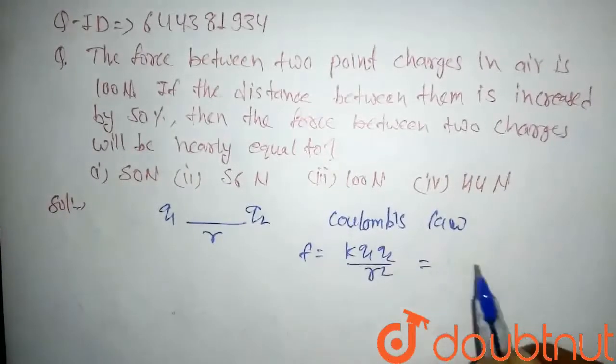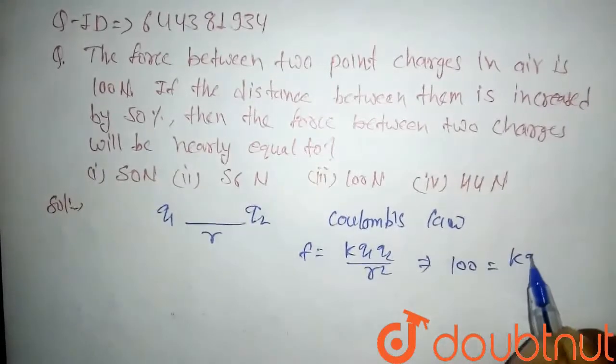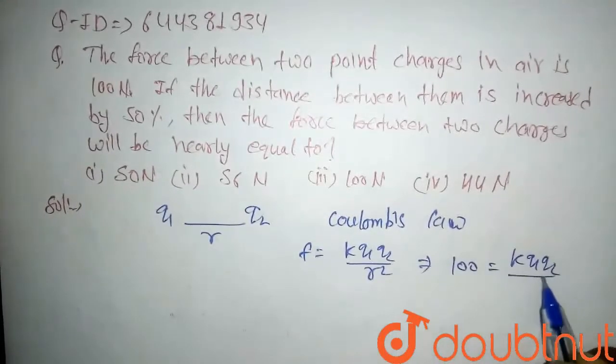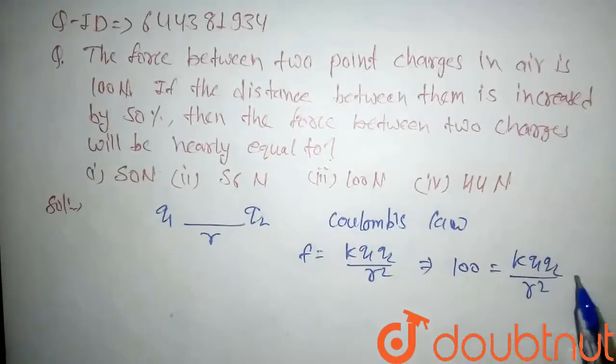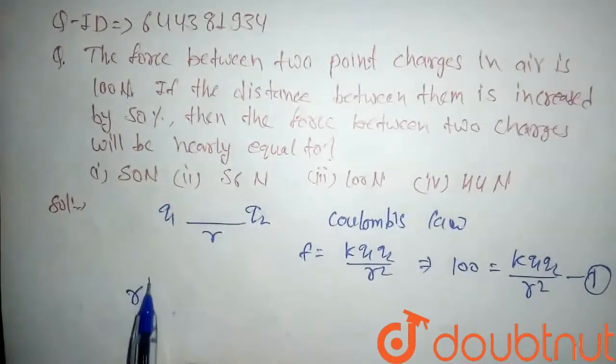Here k is constant, and it is equal to 100. So we can say k into q1 q2 upon r square equal to 100. Let's say this is our first equation. In the second case, we have the new distance.